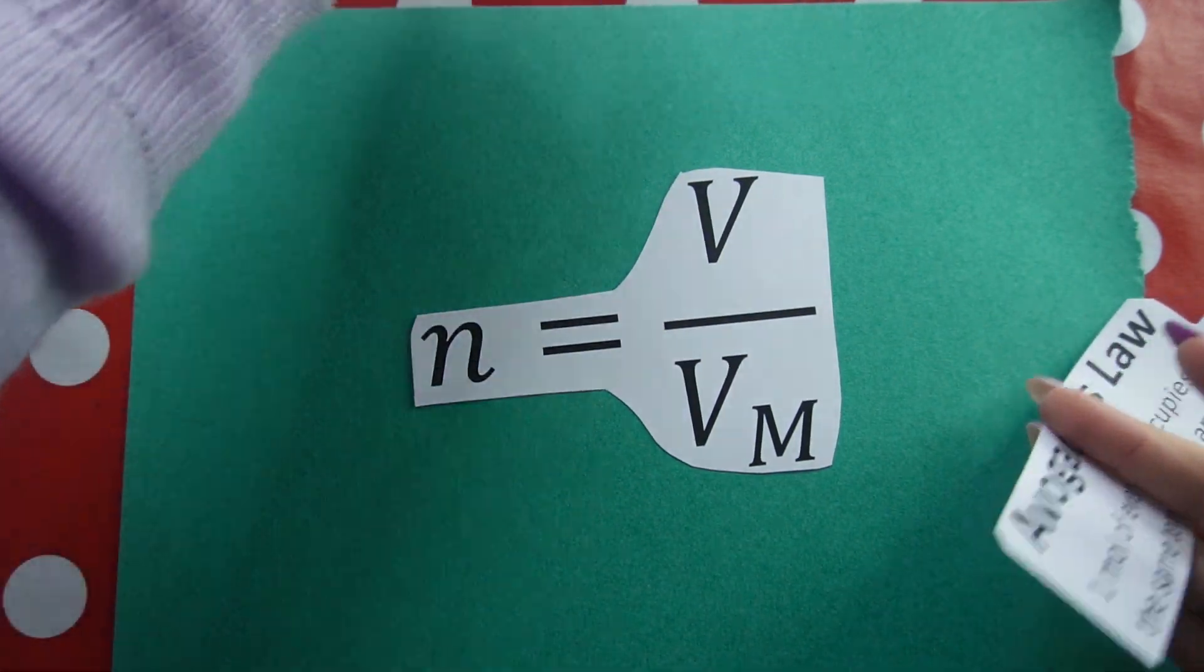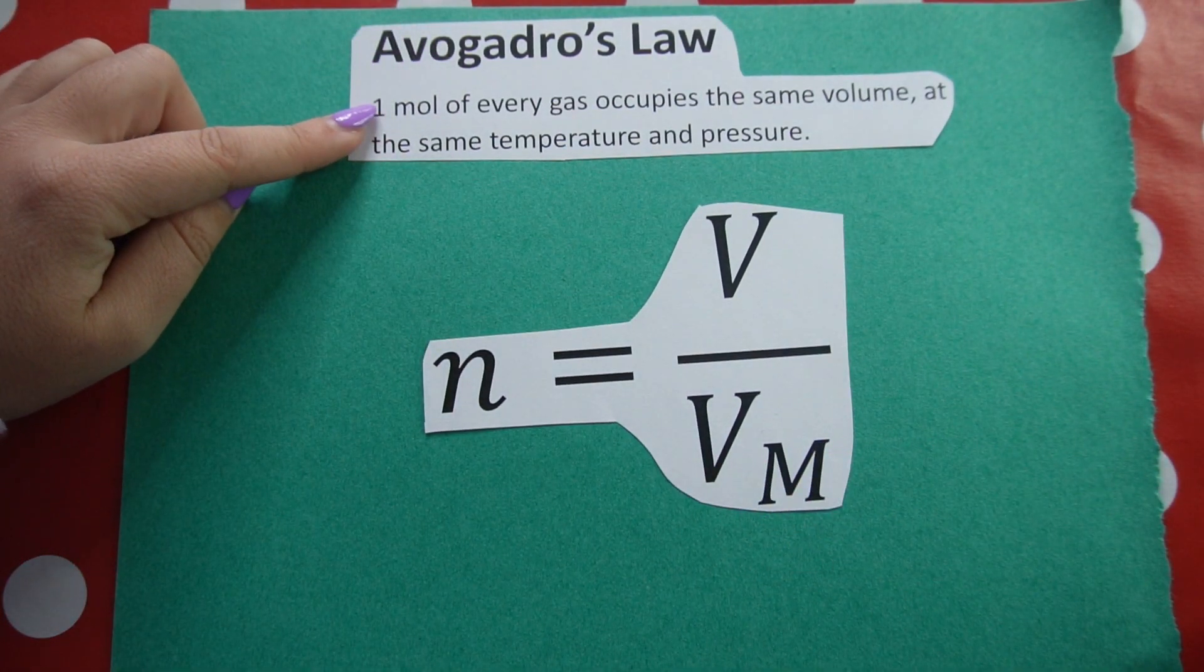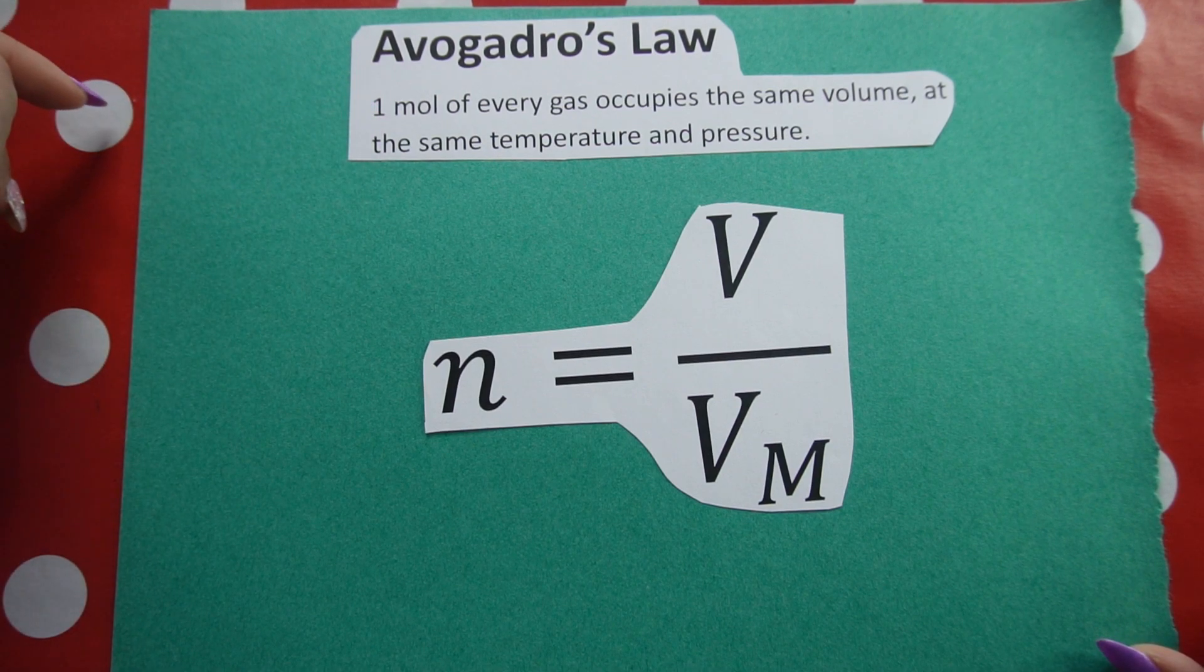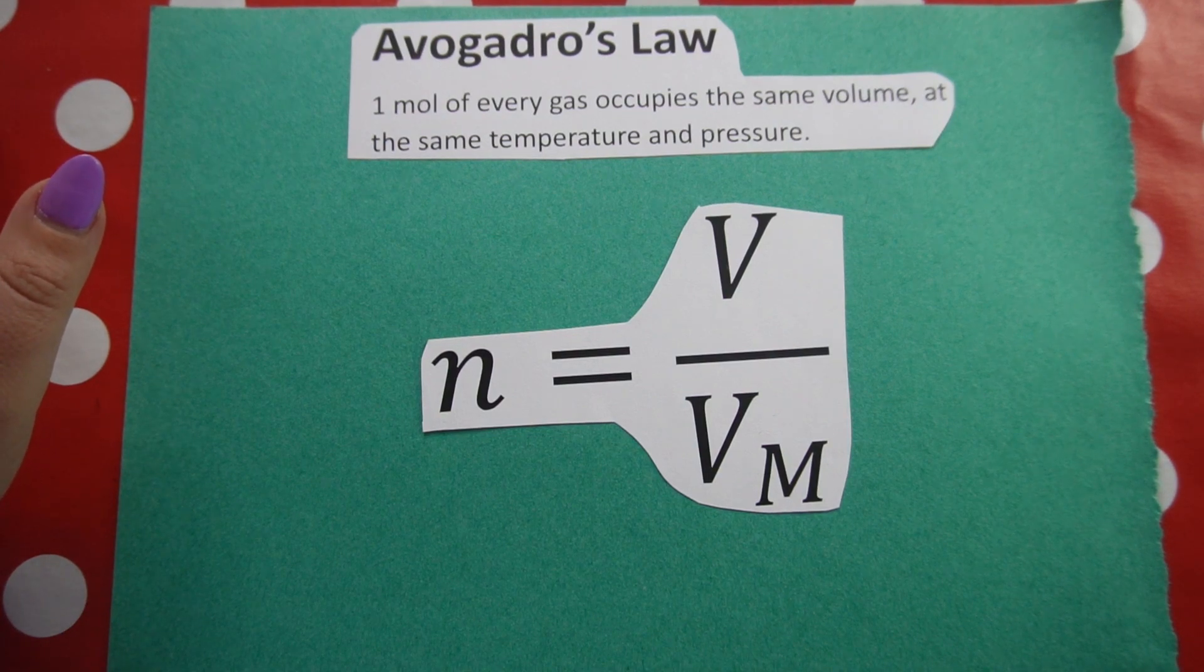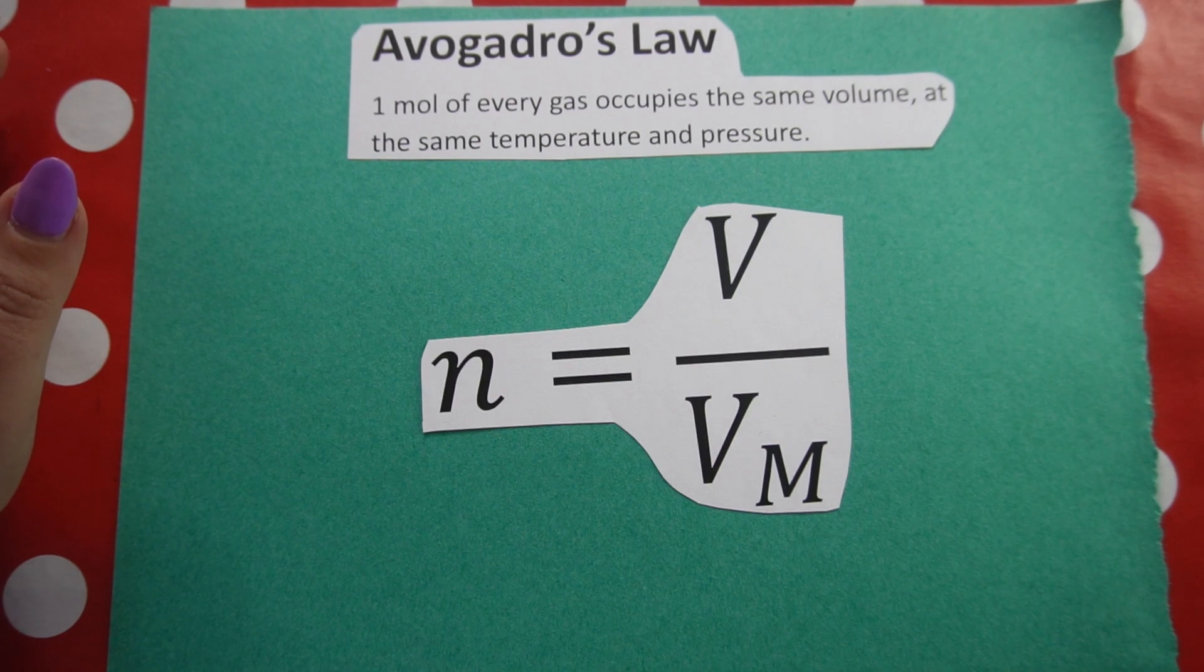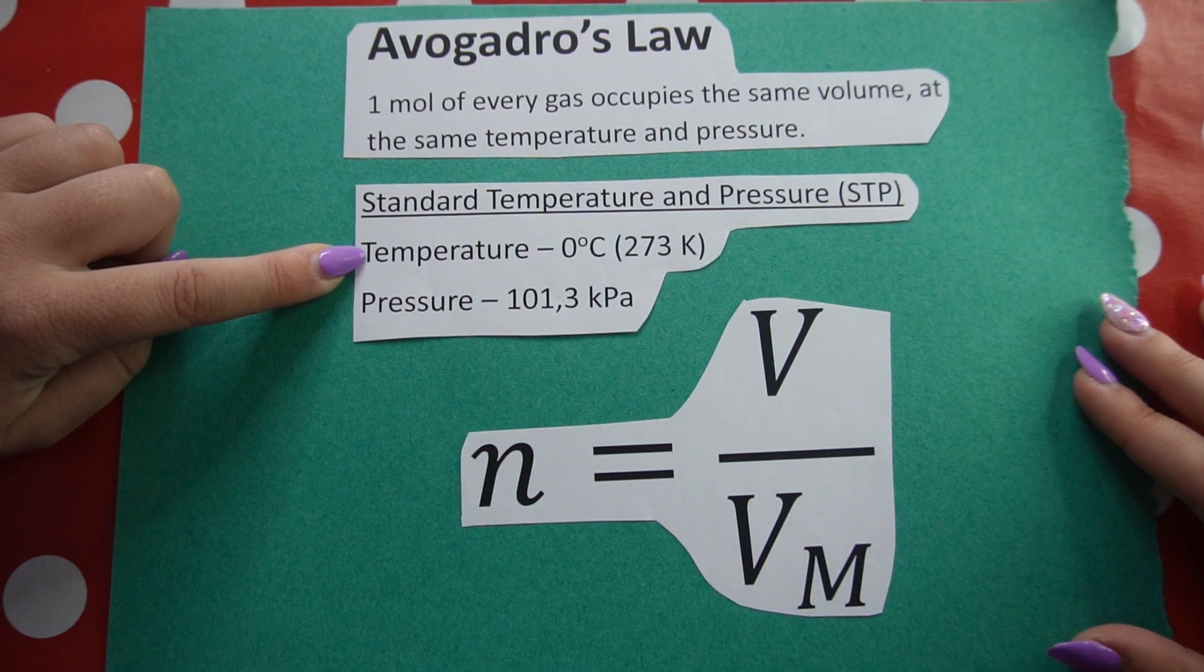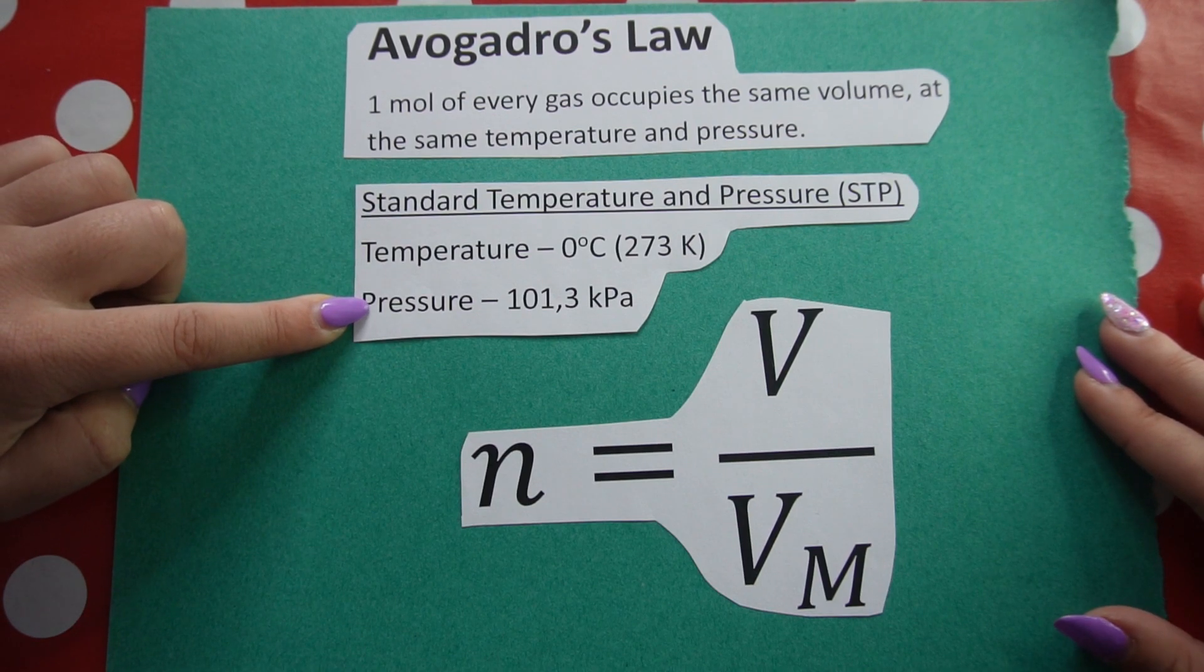This formula is based on Avogadro's law. What Avogadro says is one mole of every gas, of any gas, occupies the same volume at the same temperature and pressure. We often speak about something called STP or standard temperature and pressure: temperature 0 degrees Celsius or 273 Kelvin, pressure 101.3 kilopascals.